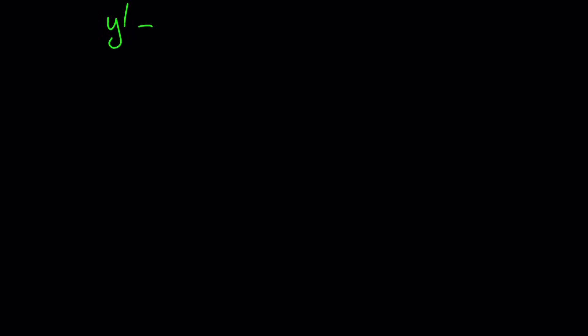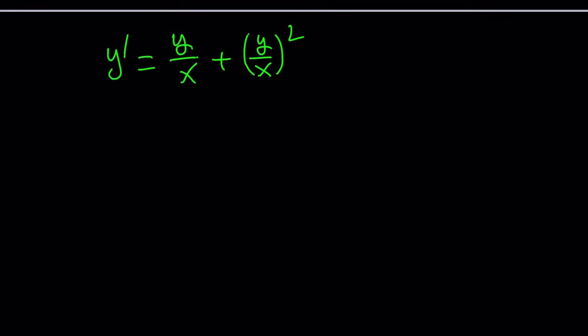So we have y prime equals y over x plus y over x quantity squared. By the way, we could also write y prime as dy over dx, indicating that we are differentiating with respect to x. But once you know that, it's not necessary. So let's go ahead and see how we can solve a problem like this. First of all, notice that y over x is being repeated. So the right-hand side, this is important. The right-hand side can be written as a function of y over x. That gives us an idea.